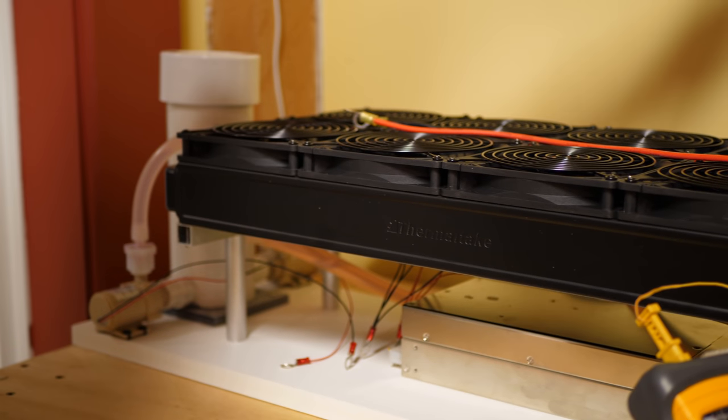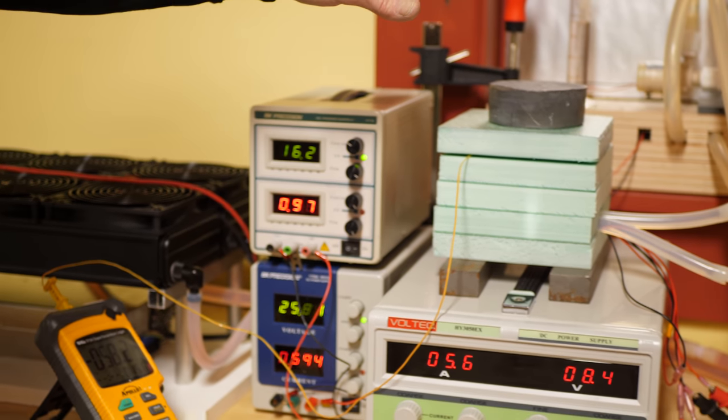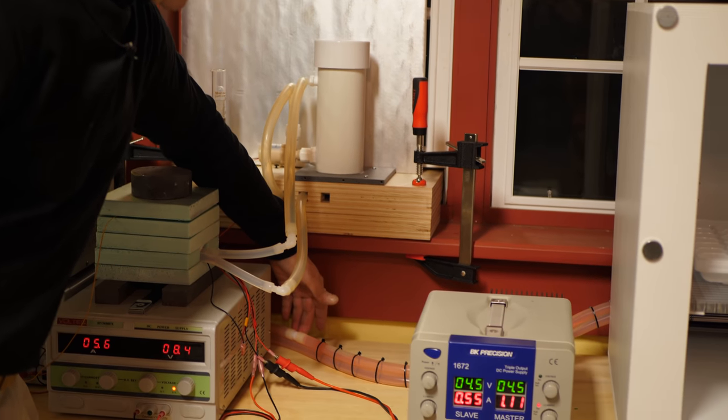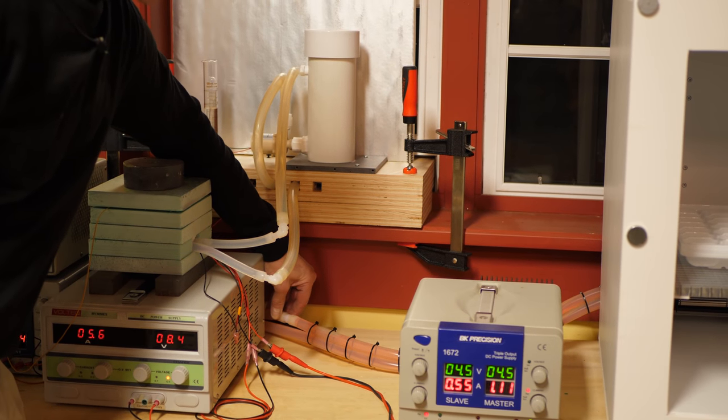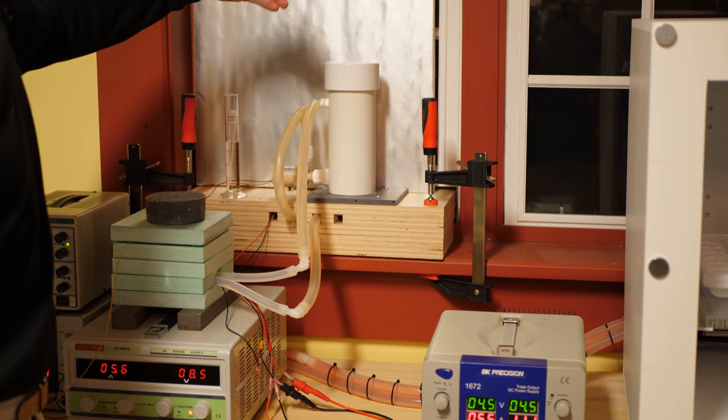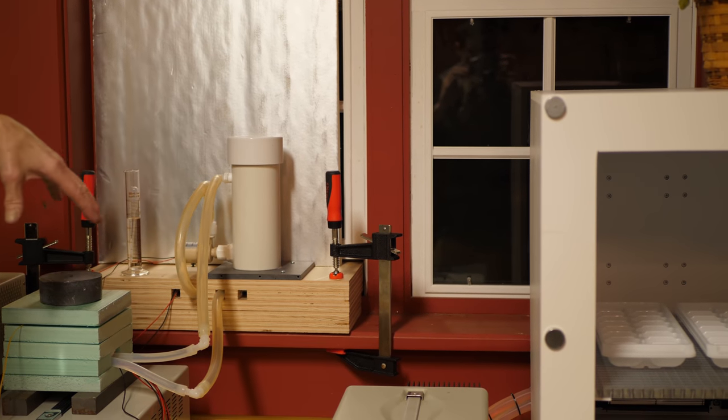In addition we've placed this entire setup on this table over here because we want to be near a window where we can splice into the return line that goes back to the refrigerator and potentially dump some additional heat outside to enhance the performance and the efficiency of the refrigerator.